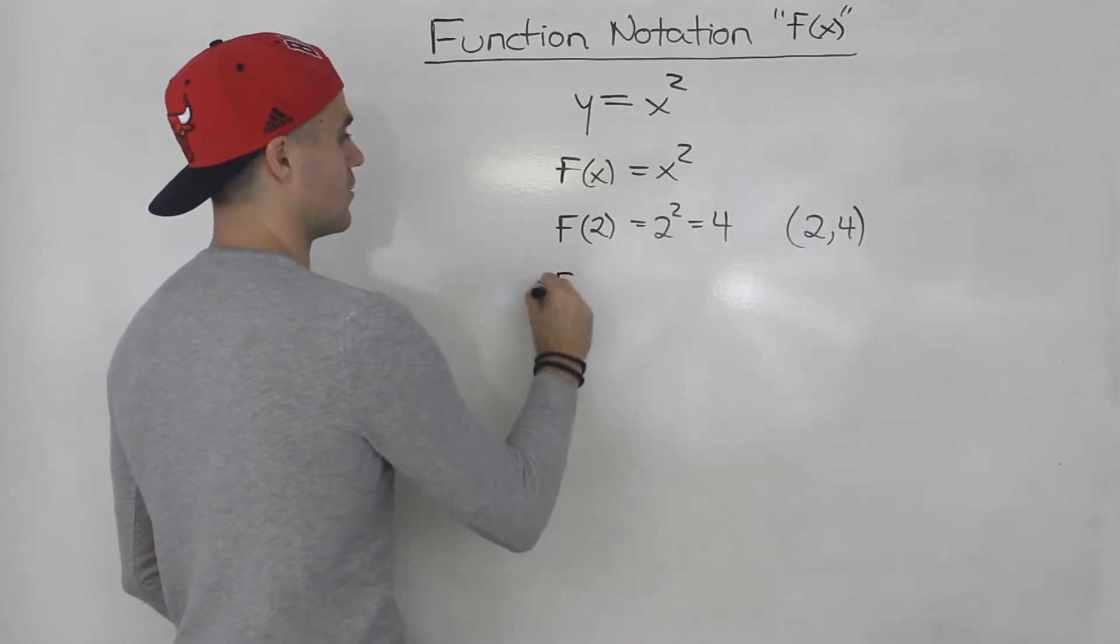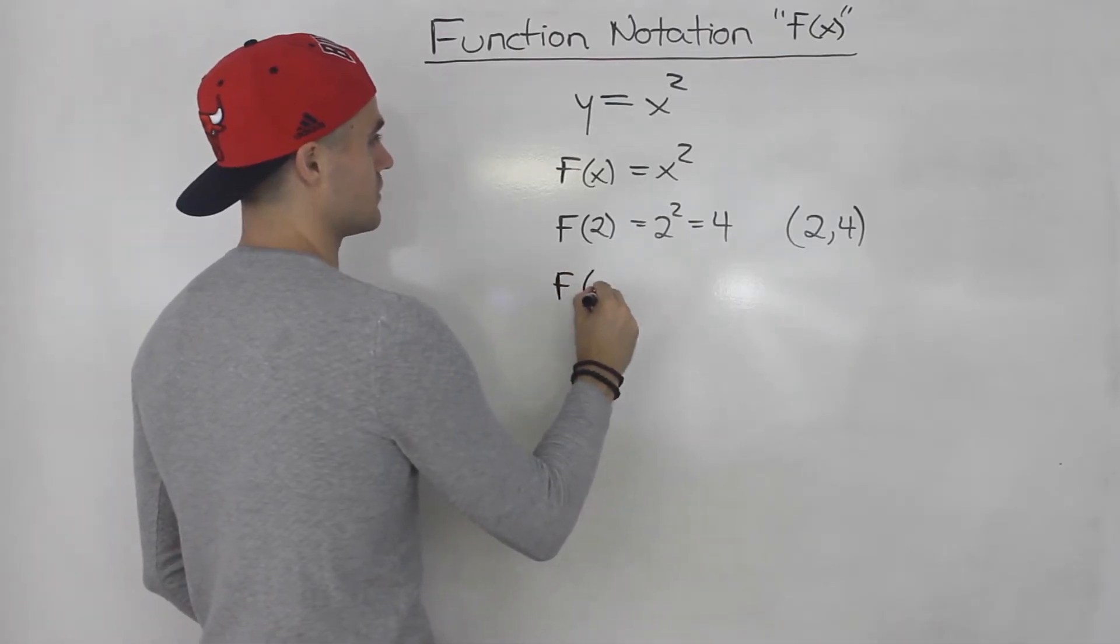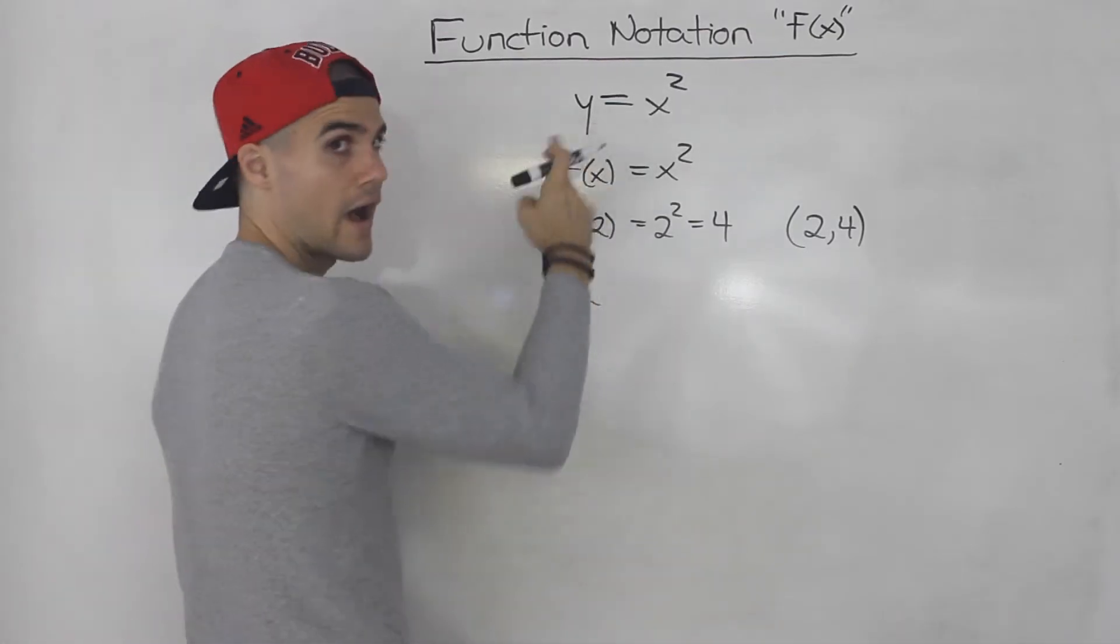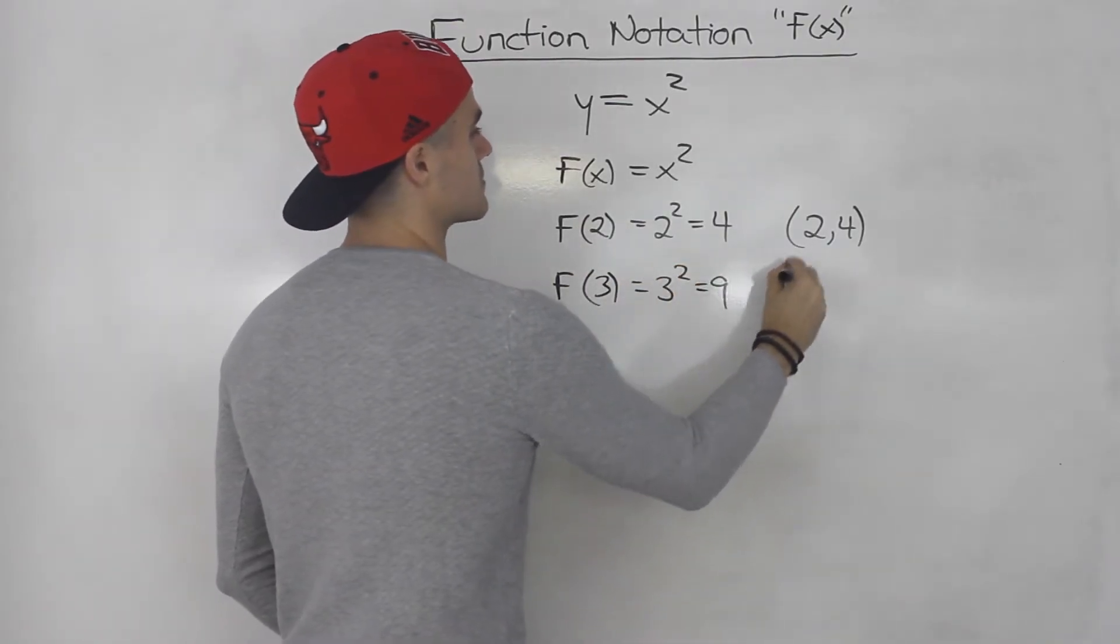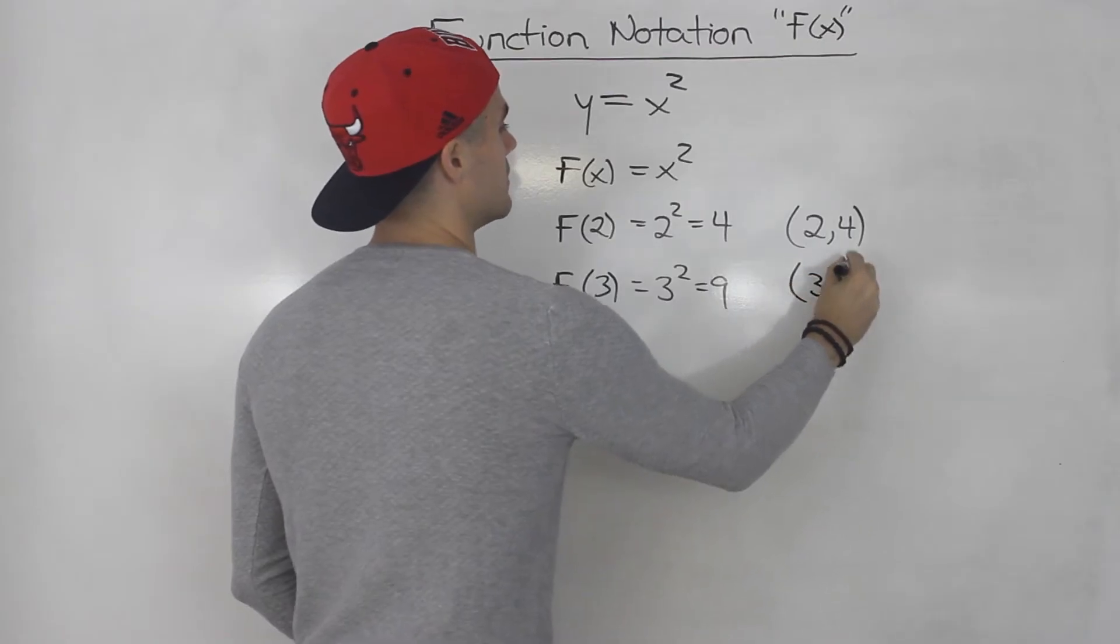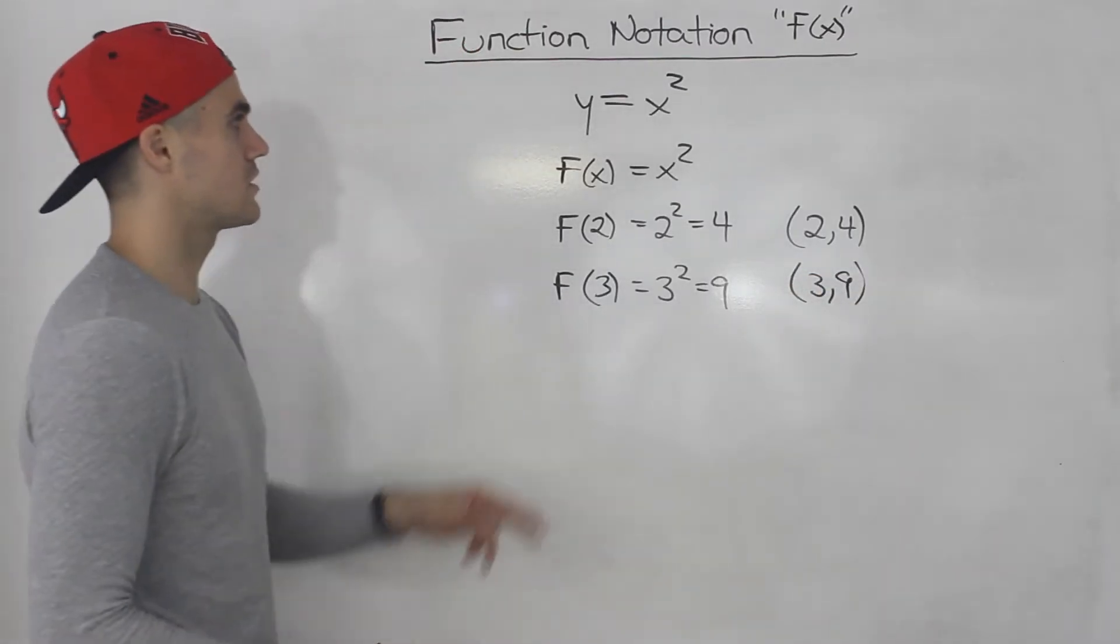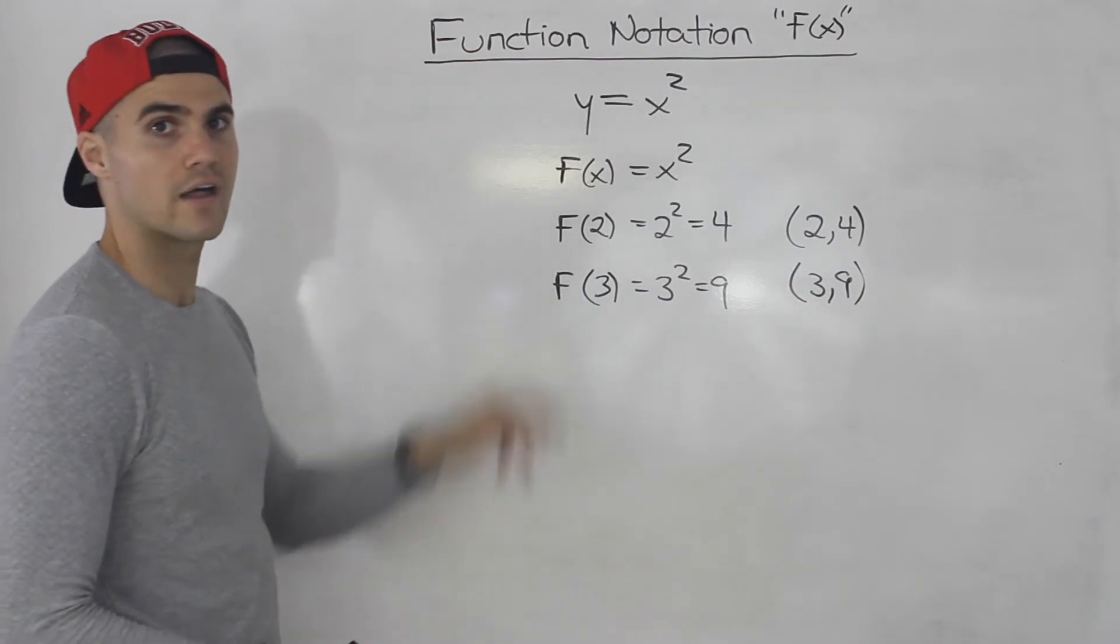If I wanted to know the value of the function or the value of y, at an x value of 3, that would be 3 squared, which would give us 9. So this would be 3 and 9, right? It's just another way to write the y value.